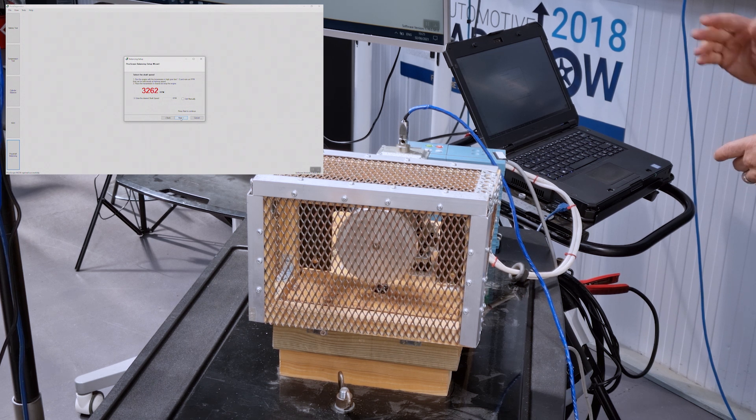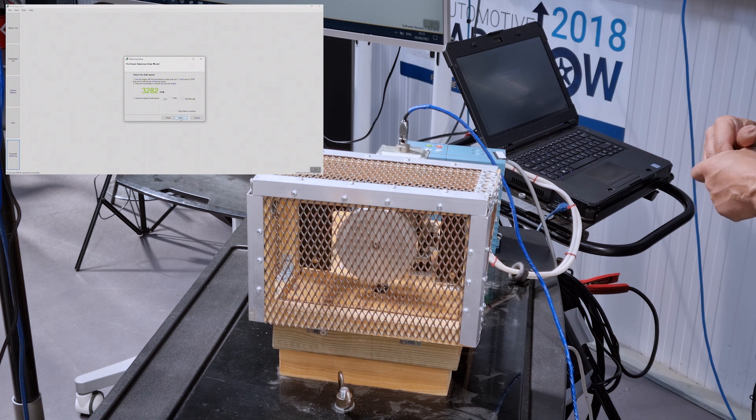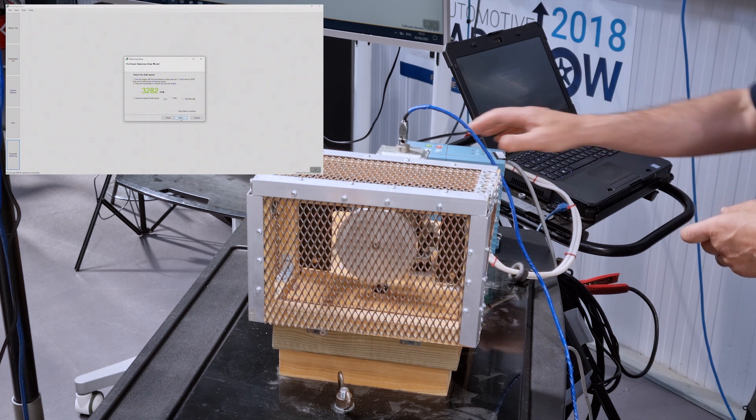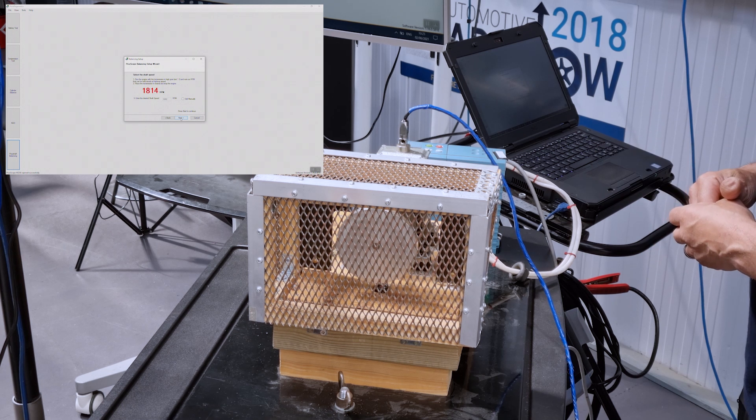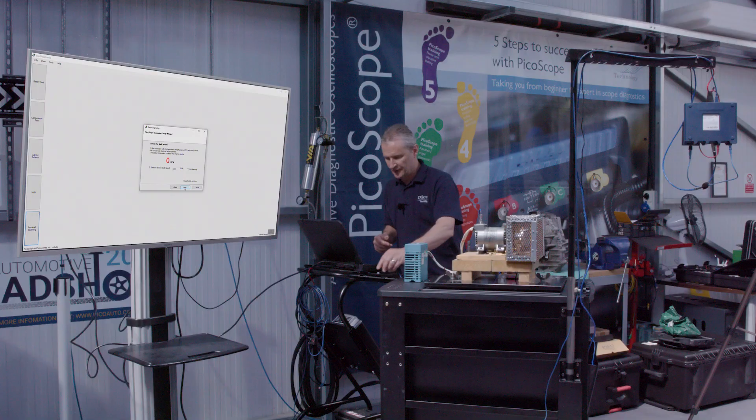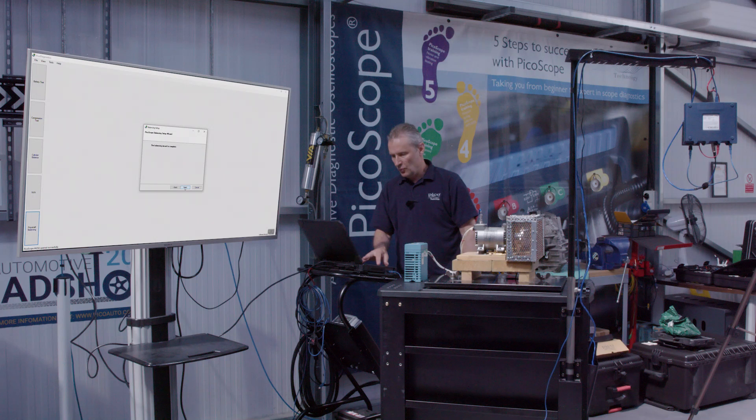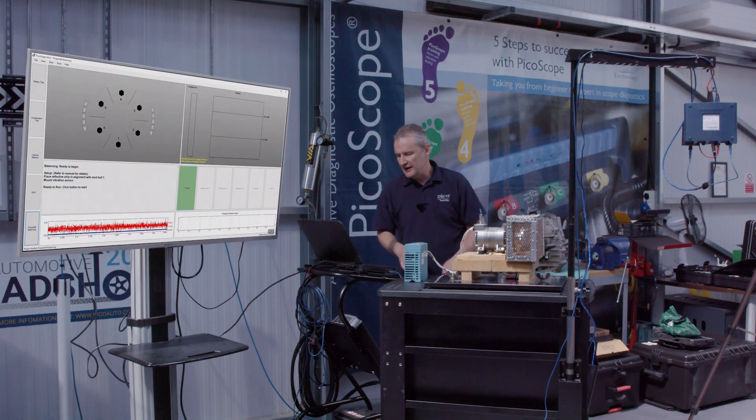Okay, that then smooths out just a little and the software has decided at 3282 RPM, that is the measurement speed required for this shaft for our balance test. So, let's run through. The balancing wizard is complete and we're now ready to start.